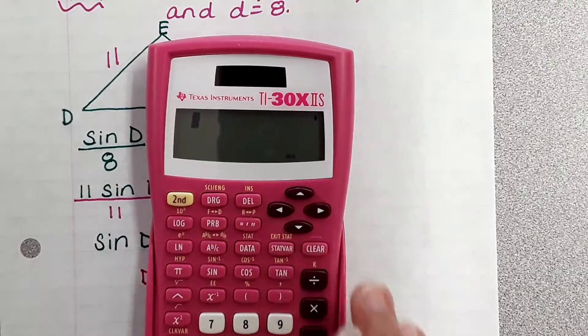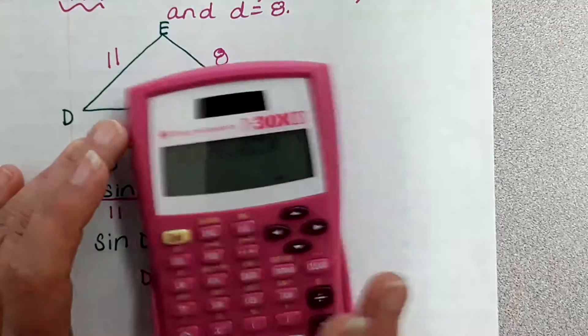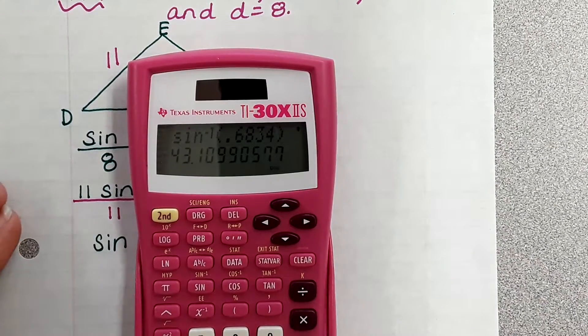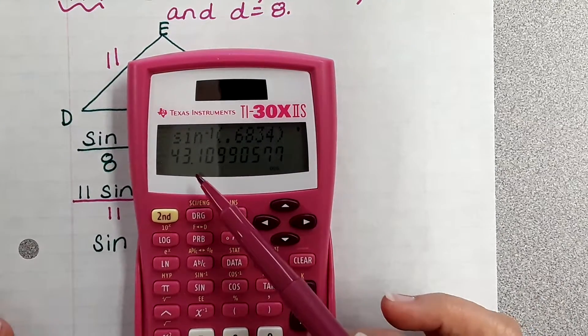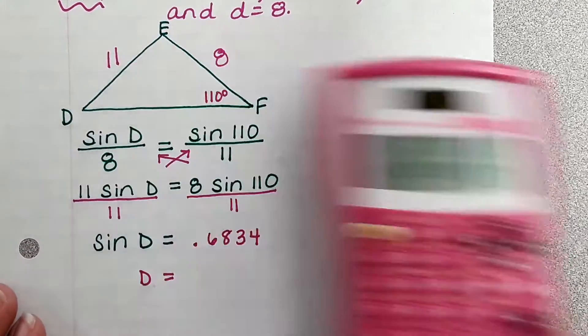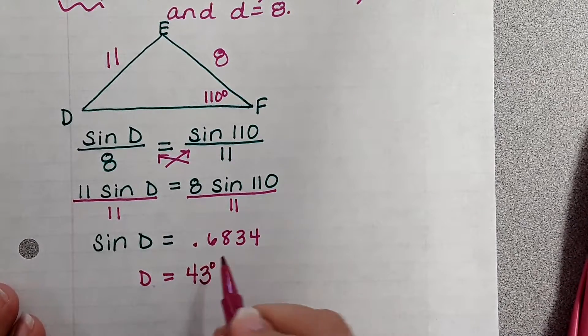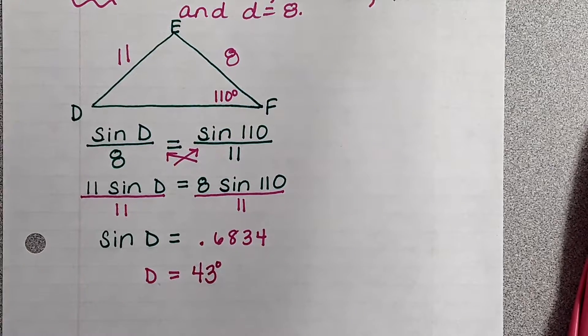So I'm going to do second sine 0.6834. Close my parentheses. I get, and it's an angle measure, so we're going to round it to the nearest whole number. So angle D is 43 degrees.